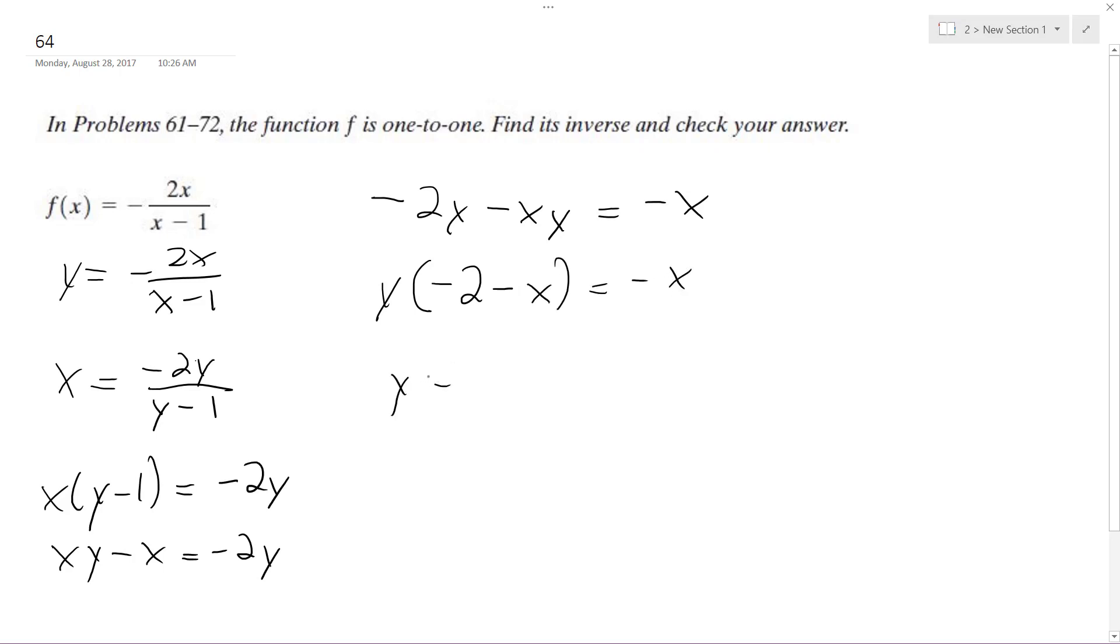So y is going to be equal to, well, I'll just leave it negative x over negative 2 minus x. Y is equal to x over x plus 2 divided by negative 1.